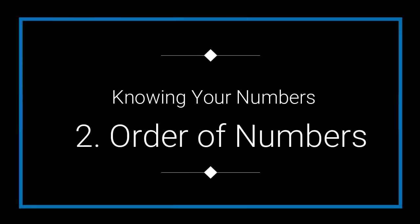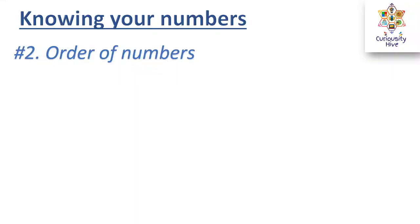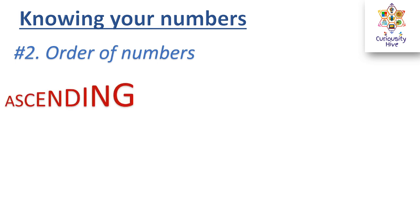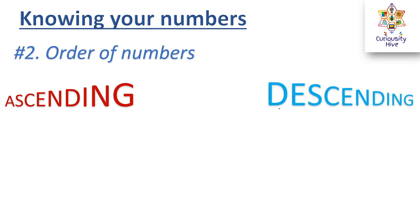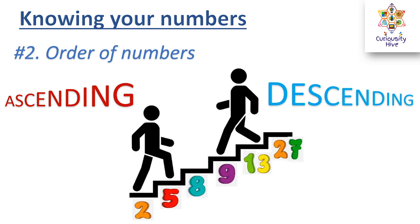Our second concept is the order of numbers, which means the arrangement of numbers — either ascending, starting from a smaller number increasing to a higher number, or descending, starting from a higher number decreasing to the smallest. To illustrate, numbers arranged along a staircase: the person moving from smaller to greater is moving in ascending order, and from greater to smaller is the descending order.